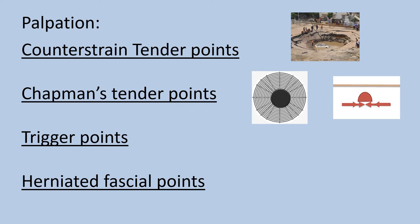A trigger point is within a muscle and feels kind of like a ravioli on a taut band of muscle that runs parallel to the muscle fibers.